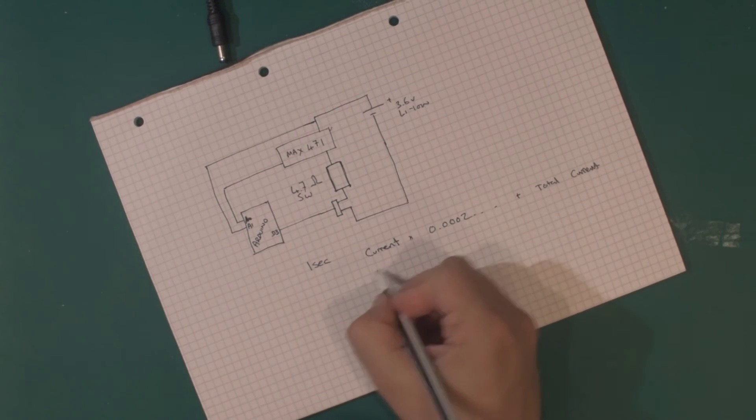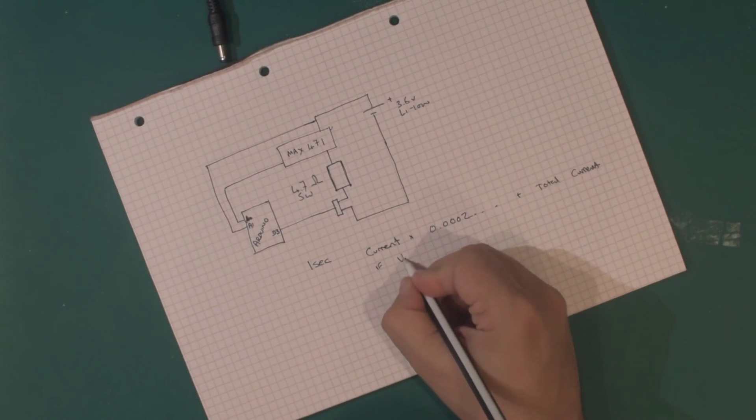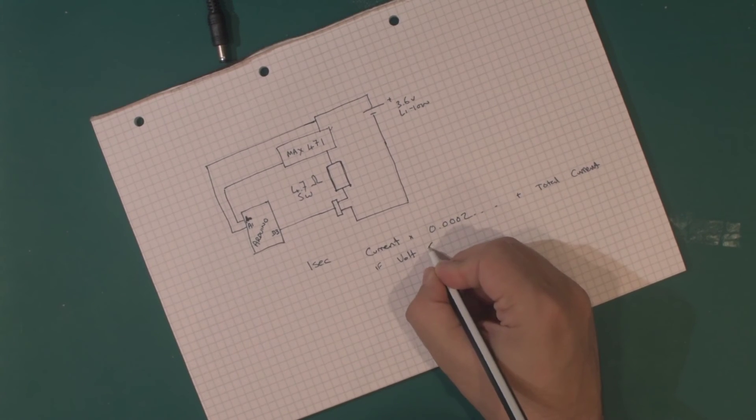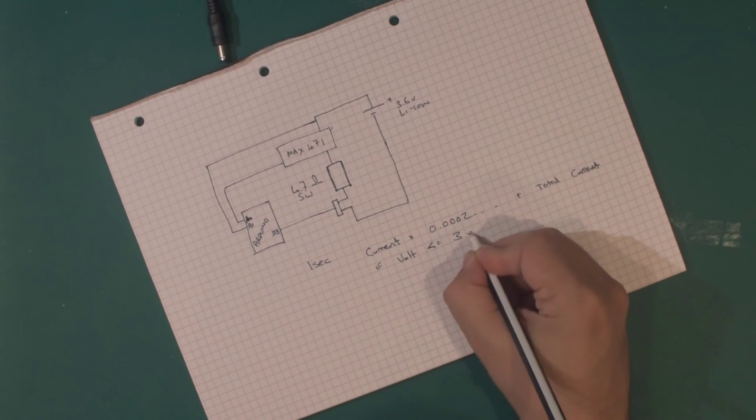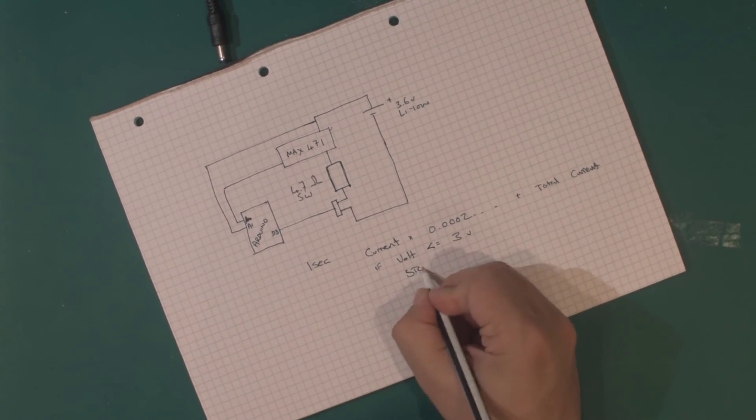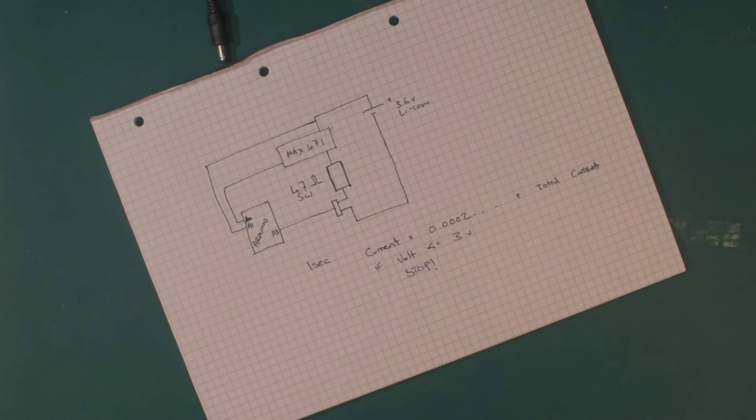And then if the voltage is less than or equal to three volts, we stop. At that point we stop the test. The code is literally two, three, or four lines. Most of the code actually involves outputting onto the serial line.